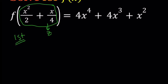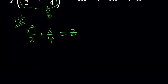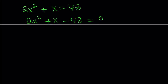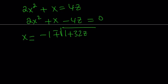Let's find out what x is in terms of z. So x squared over 2 plus x over 4 equals z, based on my assumption. Multiplying everything by 4 gives me 2x squared plus x equals 4z. So 2x squared plus x minus 4z equals 0. We treat z as a constant and solve this as a quadratic in x. The quadratic formula tells us x equals negative 1 plus or minus the square root of 1 plus 32z, all over 4.